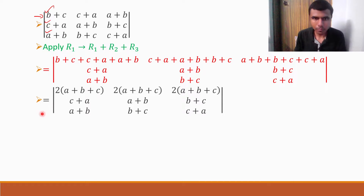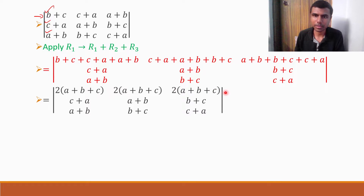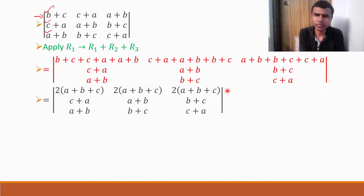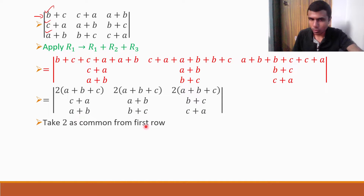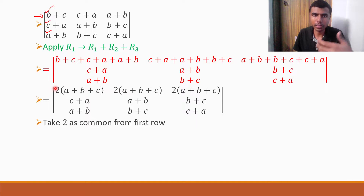Next, what to do? I got 2 into A plus B plus C in all three positions of the first row. Now just take 2 common from the first row — don't take A plus B plus C common, just take 2 as common. If I take 2 common from the first row, 2 will be outside, and I'd have A plus B plus C, A plus B plus C, and A plus B plus C remaining in that row.